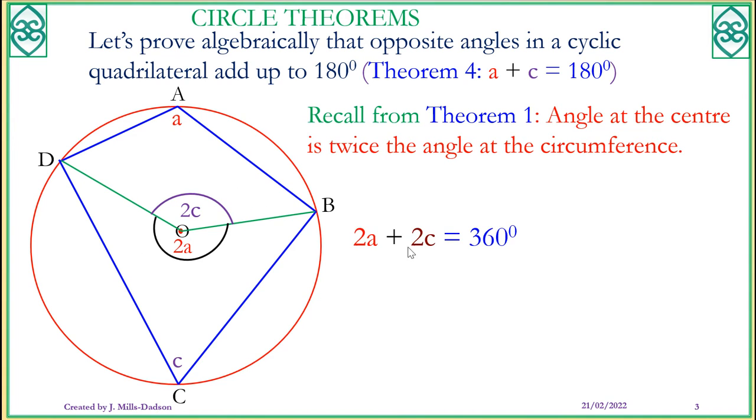So therefore, 2C plus 2A equals 360. If you divide through by 2, or if you factor out 2 on the left-hand side and divide through by 2, you end up A plus C equals 180 degrees. But you realize that A plus C is exactly the opposite angle that we are talking about. In a similar vein, B plus D must also equal 180 because you can also create another center angle with reference to B and D and you end up with the same conclusion that B plus D equals 180 degrees.